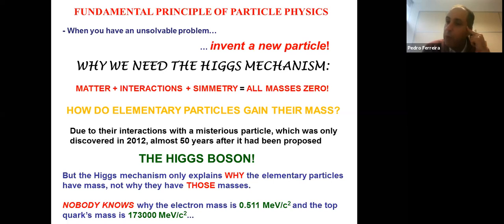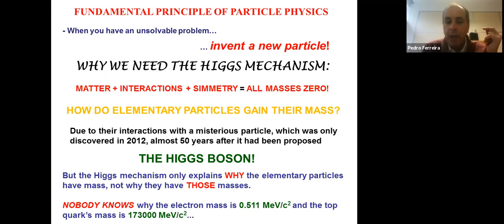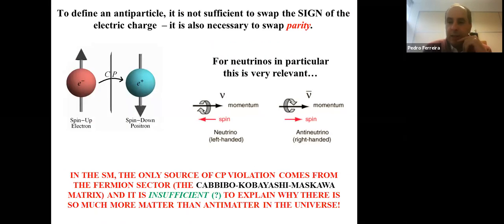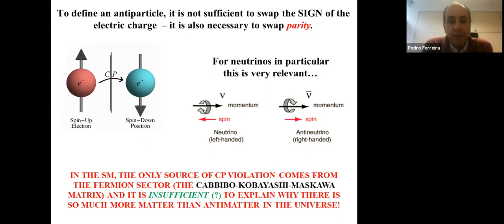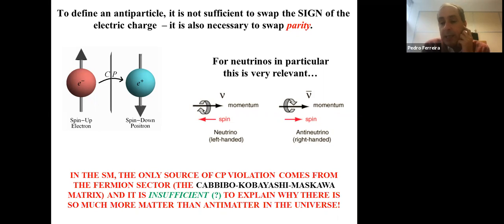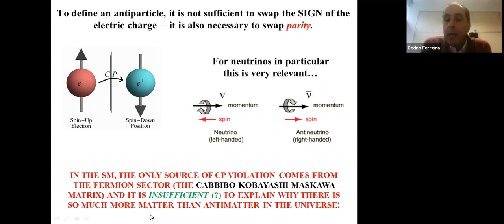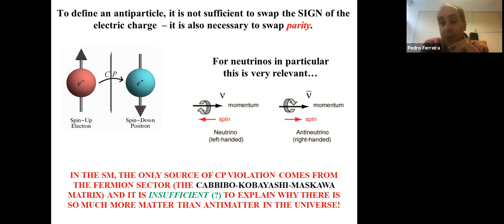Why does the electron have a mass of 0.511 MeV, and why does the top quark have a mass of 173,000 MeV? Nobody knows. Then there is another issue: we know that particles have their mirror images — antiparticles. The definition of an antiparticle is actually the CP conjugate of a given field, in which you use two operations — charge conjugation and parity conjugation — to transform a particle into its antiparticle. This symmetry which we put in the model is actually broken. We know it is broken because there is a huge excess of matter relative to antimatter. In the standard model, the only source of CP violation comes from the Cabibbo-Kobayashi-Maskawa matrix, and that amount of CP violation in the CKM matrix is insufficient to explain why there is so much more matter than antimatter.